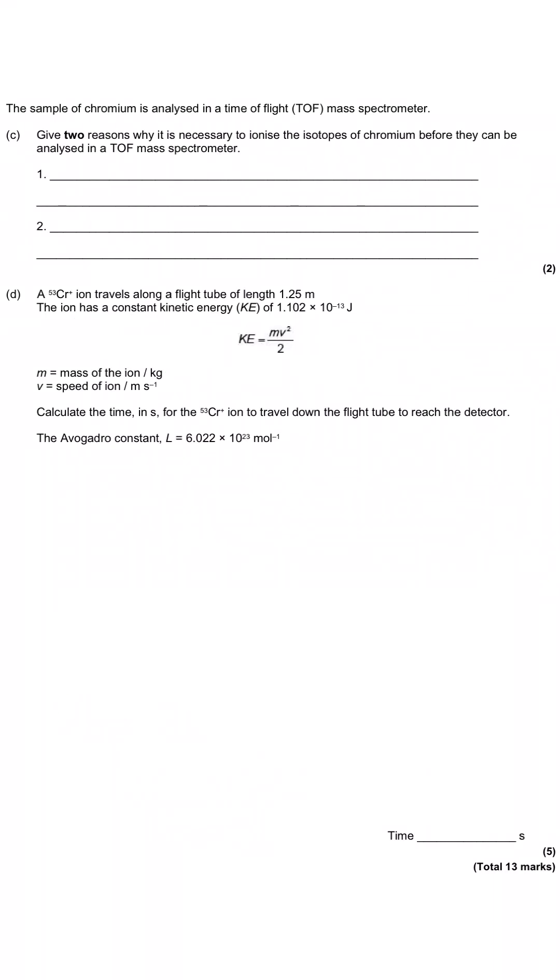The question then moves on to start asking us about the time of flight mass spectrometer, which is the abbreviation TOF. Now it's worth noting as you read through an exam question the method of ionization, because there is a fundamental difference between using an electron gun which knocks off an electron and the electrospray ionization which adds a proton, but that's not the avenue that we're going down here. They're simply asking us why it's necessary to ionize the isotopes before they can be analyzed, and there's two reasons and they've given us two spaces as a mark for each of them.